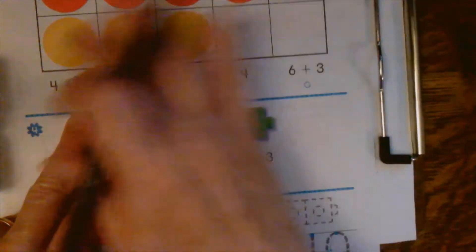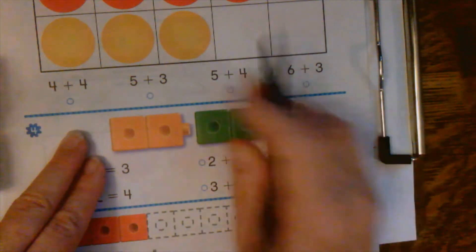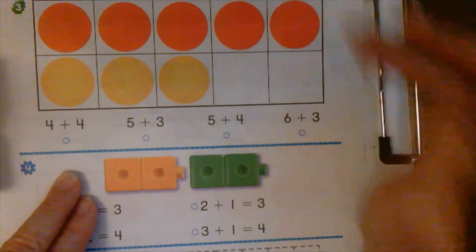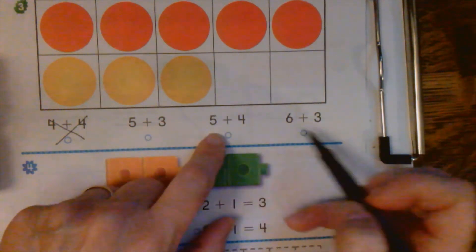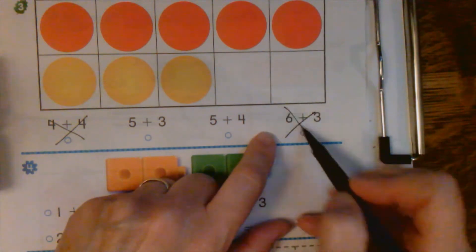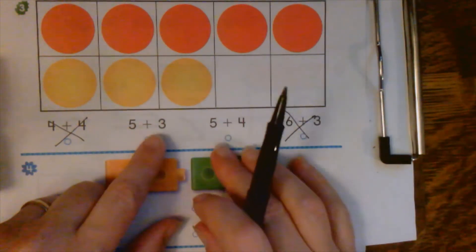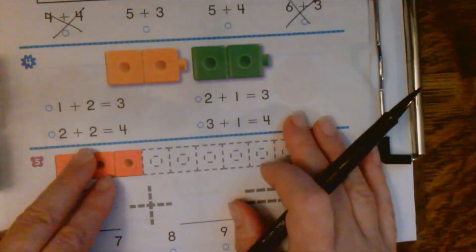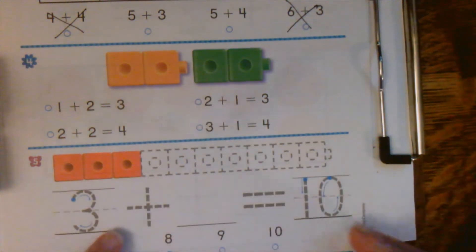Right here we have some red ones and some yellow ones. Which of these shows what's up here? Well you know a full row is 5, right? So it can't be that one. It could be this one. It could be this one. It can't be this one. Because we have this full row of 5 red ones plus some yellow ones. Which one of these shows that? Here's another one. Easy! Which one of these number sentences shows that. Color in the circle.